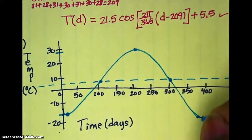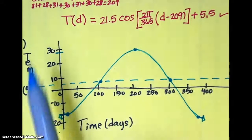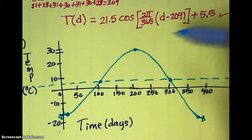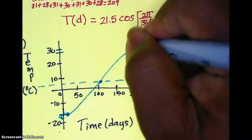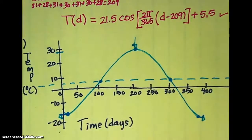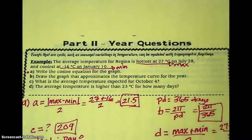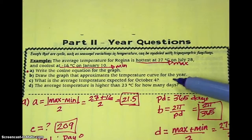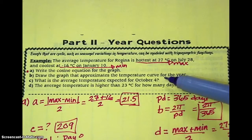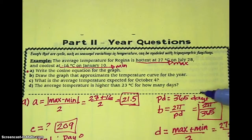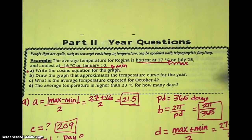One thing you may be concerned about is that we did not write an equation that showed a negative reflection, but remember our equation assumes that we're starting at the max 209 days into the cycle. So this is the graph we will use to represent the entire year. Now for the calculator questions, you'll need your graphing calculator. Part C asks about the average temperature expected for October 4th.